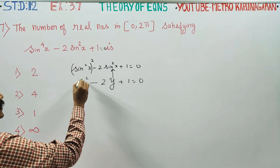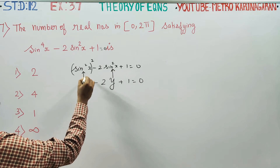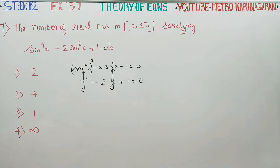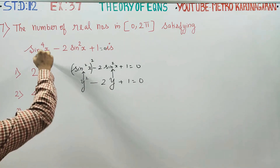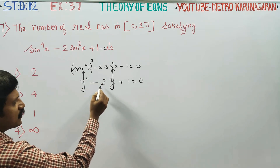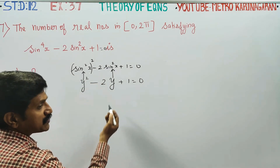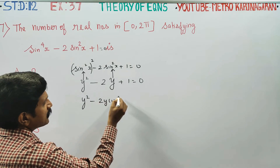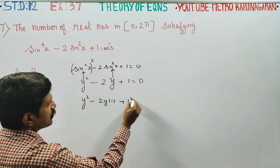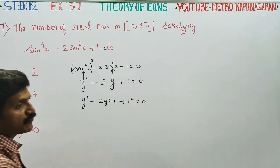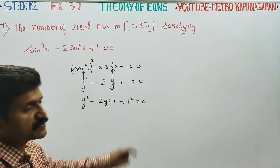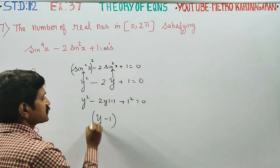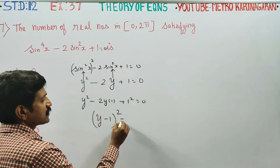Let y = sin²x. So the equation becomes y² - 2y + 1 = 0. This follows the identity a² - 2ab + b² = (a - b)², so this factors as (y - 1)² = 0.